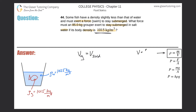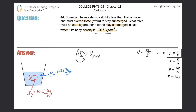Solving for volume gives us volume = mass / density. Substituting in, the volume of the grouper equals mass of the grouper divided by density of the grouper, and that equals the mass of the displaced salt water divided by the density of the salt water.